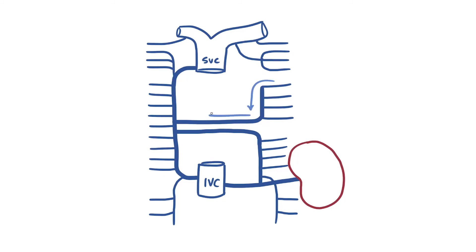The azygos network primarily functions to return blood from the thoracic wall to the superior vena cava. However because it connects the two vena cavae, it also provides an alternative route for blood to enter the heart if either of these structures become obstructed.